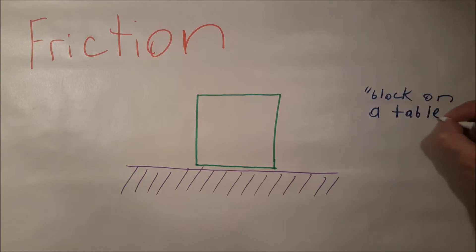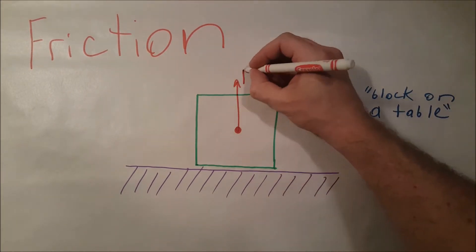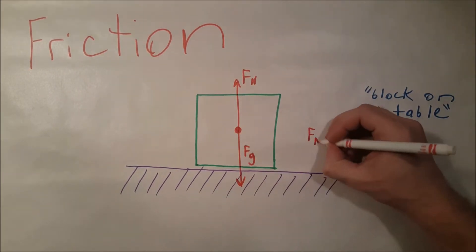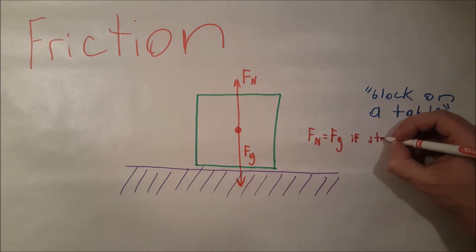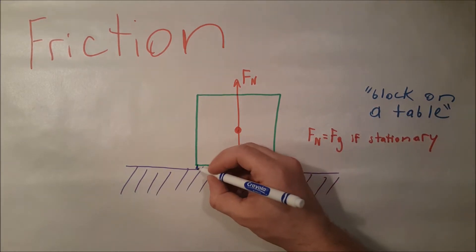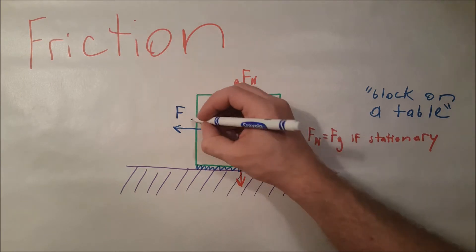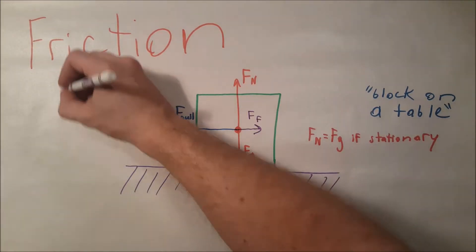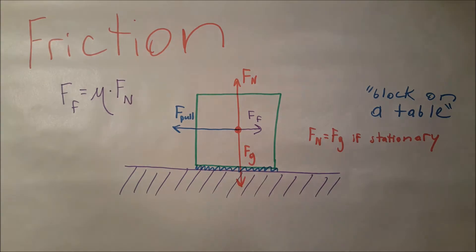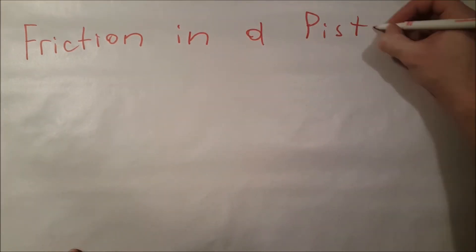Next up, we have the friction force to consider. In typical physics textbooks, you're just going to see a block on a table. You'll have force normal, the force preventing your block from falling through the table, and force gravity, which is pushing downward. You're going to have some force of friction holding that block to the table, which can be expressed as this equation where μ is the coefficient of friction between those two surfaces.